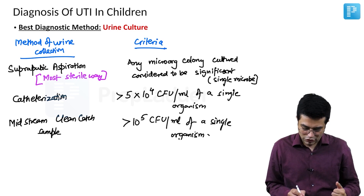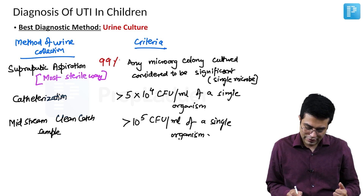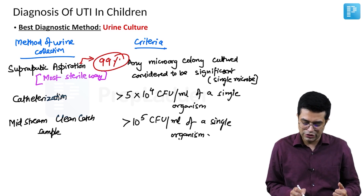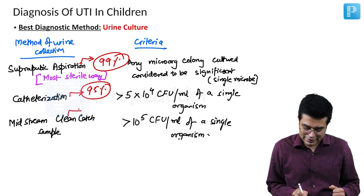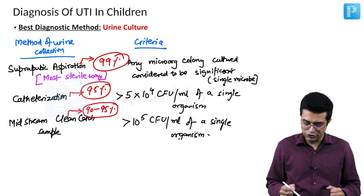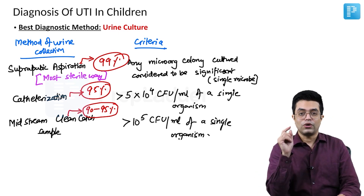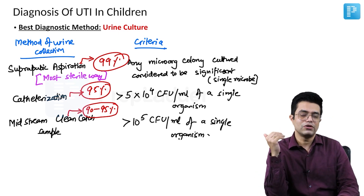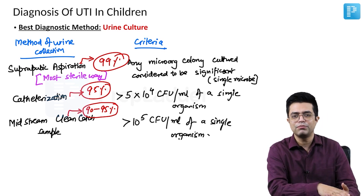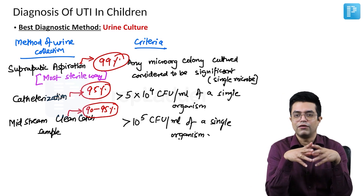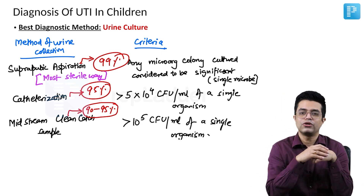Suprapubic aspiration has a sensitivity of 99% in detecting UTI, catheterization about 95%, and midstream clean catch sample between 90 to 95%. That is why urine culture is the diagnostic standard. It is also important because urine culture reveals the culture sensitivity pattern, allowing you to start with empirical therapy initially and later shift to a focused antibiotic of choice.